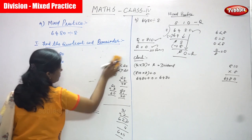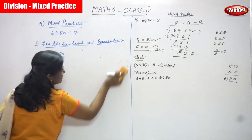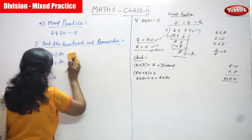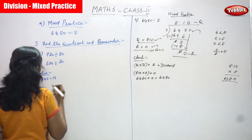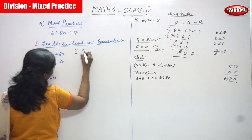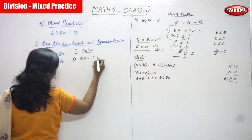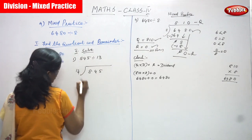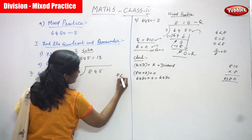Now I am going to solve the last problem — the third problem in mixed practice. These are all mixed practice because we use a three-digit dividend with a single-digit divisor, a four-digit dividend with a single-digit divisor, or a three-digit dividend with a two-digit divisor — all combined together. That is what the heading 'mixed practice' means. The first question is 845 divided by 13.